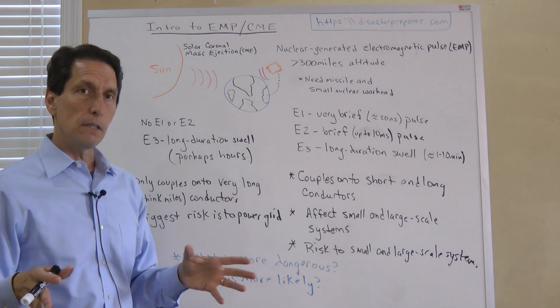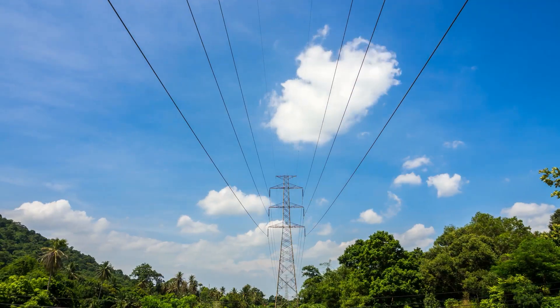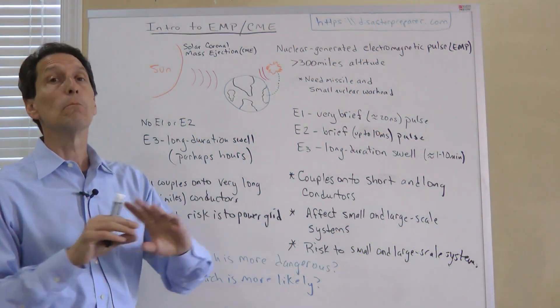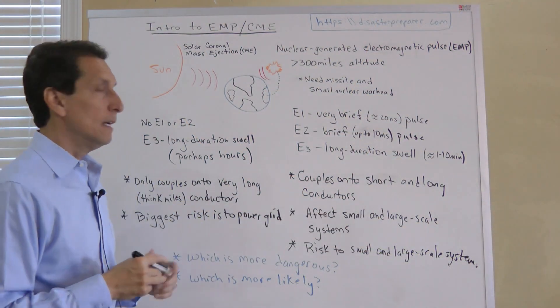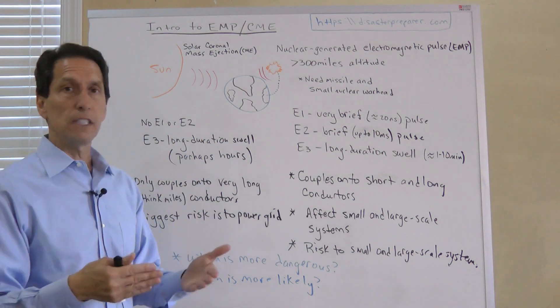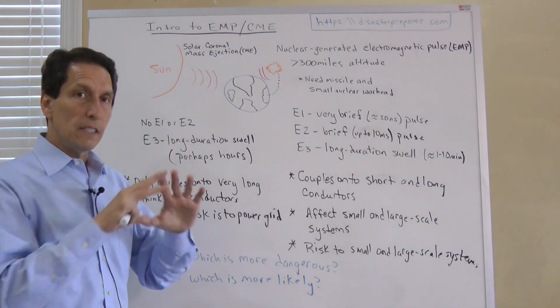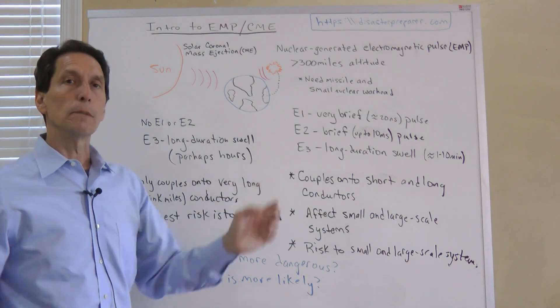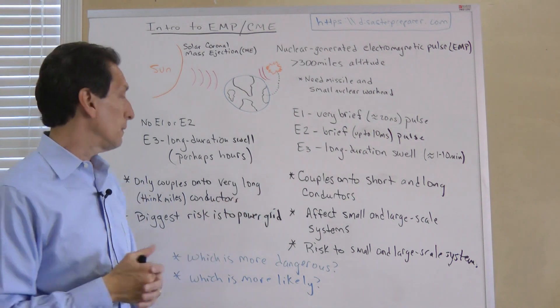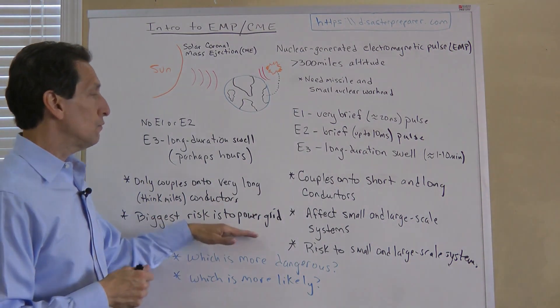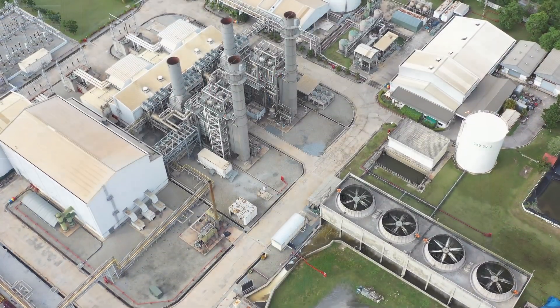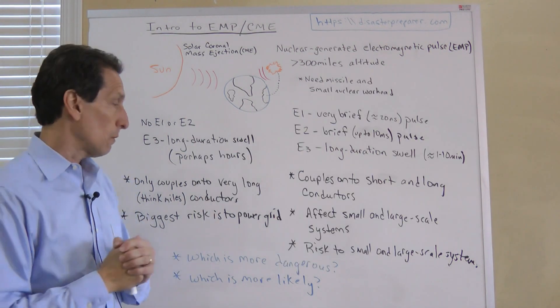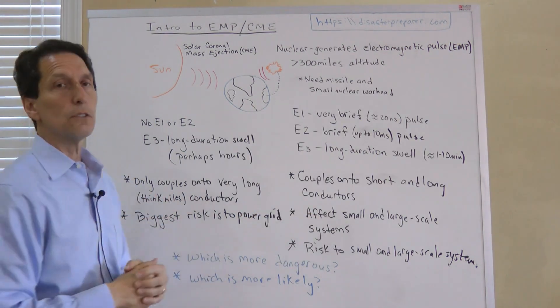The CME only had this E3, so it can only couple into very long conductors. When I say very long, I don't mean like the harnesses in your car. I mean things that are miles long. A CME won't affect anything that doesn't have conductors attached to it that are miles long. But anything attached to the power grid fits right in that. You can couple that energy in there and potentially that energy flows downstream and causes damage to anything connected to it. So the biggest risk from the CME is to the power grid.